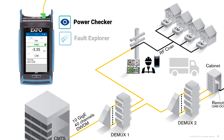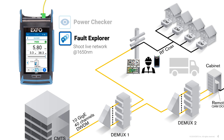The final step is to confirm there are no other issues on the span. This is done with the OX1 utilizing the filtered 1650 wavelength to shoot the span in fault explorer mode. This is done while the span is live to confirm the span has been restored to the proper specs before the cut. The 1650 wavelength doesn't interfere with traffic, which makes it possible to shoot into the span beyond the DMUX without affecting live traffic on other wavelengths.